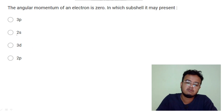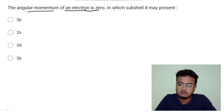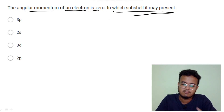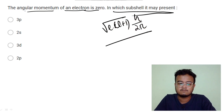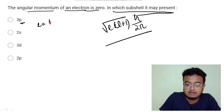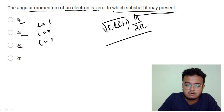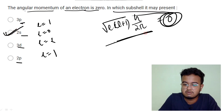Next: the angular momentum of an electron is zero — in which sub-shell may it be present? The angular momentum formula is: root of l(l+1) times h/2π. For s orbital, l equals zero; for p, l equals one; for d, l equals two. So when angular momentum is zero, l must equal zero — which corresponds to the s orbital.